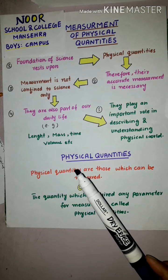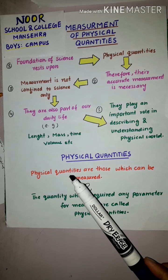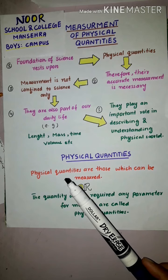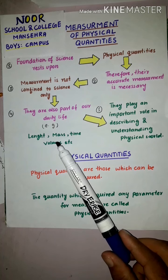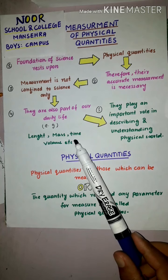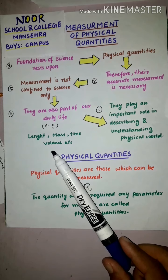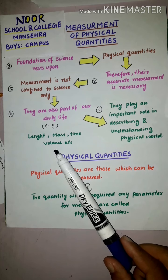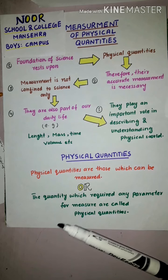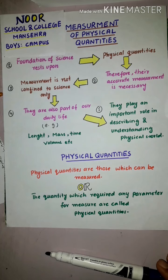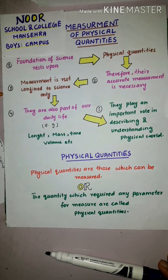Measurement is not confined to science only — it is also part of our daily life. We use length for measurement of different things; we measure mass in kilograms, as well as time and volume of different liquids used in our daily life. They play an important role in describing and understanding the physical world.